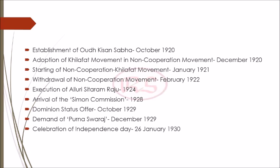So Gandhi ji decided to do something to which people could relate. He wrote a letter to Lord Irwin citing 11 demands on 31st January 1930. The ultimatum given was 11th March. But when Gandhi ji saw that Lord Irwin was not reacting to it, on 12th March 1930 — the day after his ultimatum — he started his Dandi March.